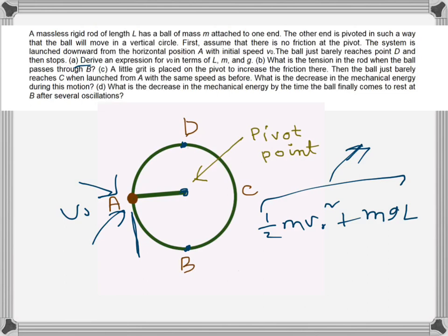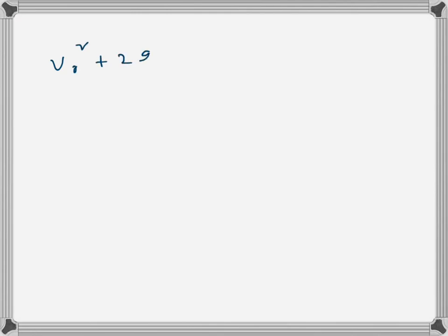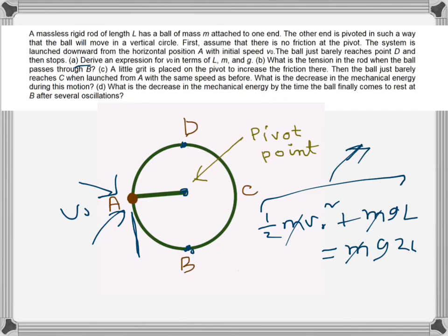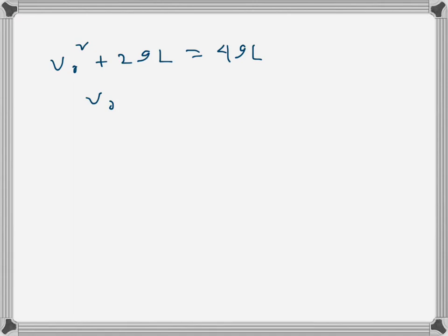Using that mechanical energy, the ball reaches point D and stops, meaning kinetic energy is zero and only potential energy remains. The height from B to D is the diameter, which is 2l, so the potential energy at D is mg(2l). Setting energies equal and canceling m's gives v_naught squared equals 2gl, so v_naught equals the square root of 2gl.